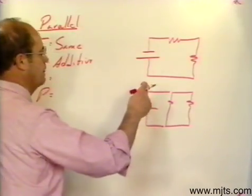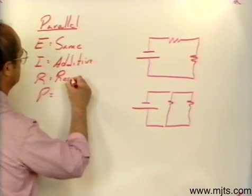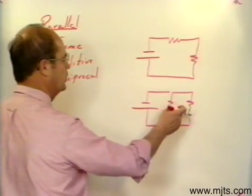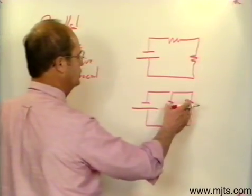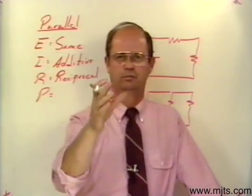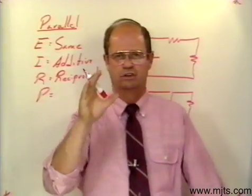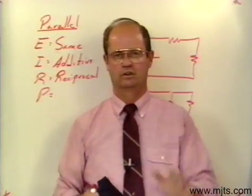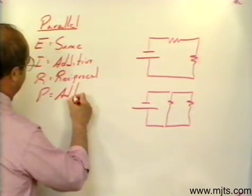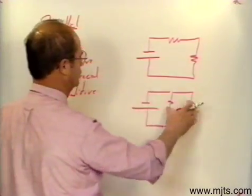The resistance in a parallel circuit is calculated by the reciprocal method. We actually learned three methods: equal branch, unequal branch, and the reciprocal method. The reciprocal method works for all of them regardless. When we add resistors in parallel, their total resistance is going to be lower than the lowest resistance in that circuit. Power, as we said, is additive in any circuit. Those are the rules for a parallel circuit.